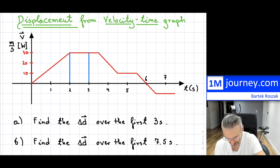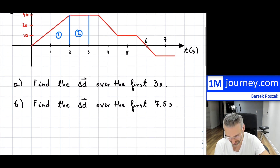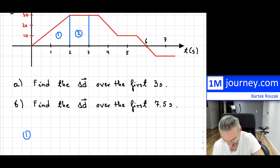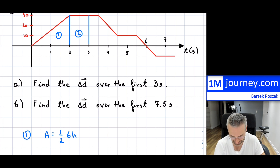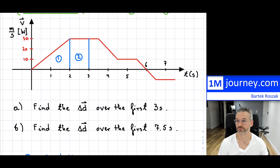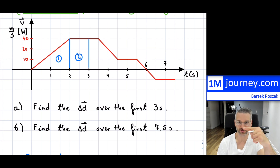I can break this up into two pieces — piece one and piece two — for Part A. The first piece is a triangle. The area of a triangle, as you should remember in grade 11, is base times height divided by two. For us, we have units: the velocity is in meters per second going west, and time is in seconds.